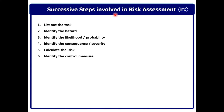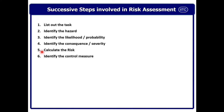There are six basic minimum successive steps involved in risk assessment — you can expand these as needed. Step one: list out the task. Step two: identify the hazard in the task. Step three: identify the likelihood and probability of the hazard realizing into risk. Step four: identify the consequence or severity. Step five: calculate the risk — risk is a bidimensional product of likelihood and severity. Step six: identify the control measures, and then implement them.